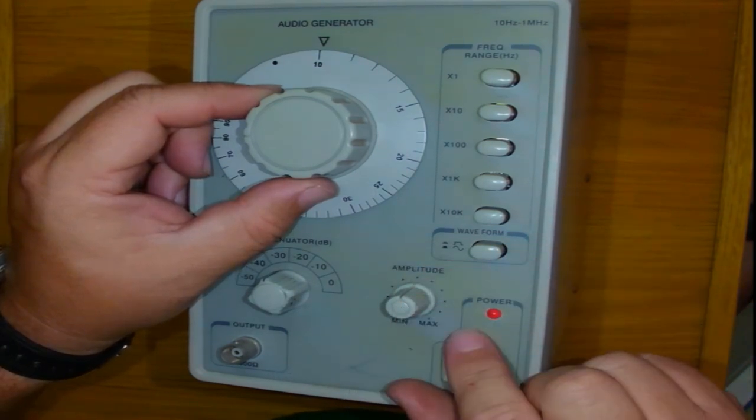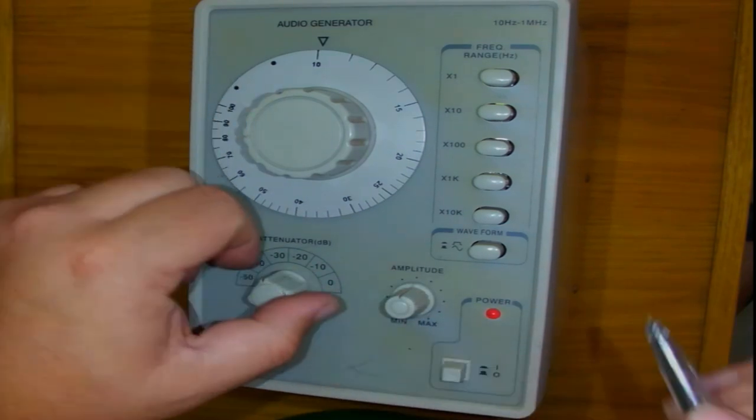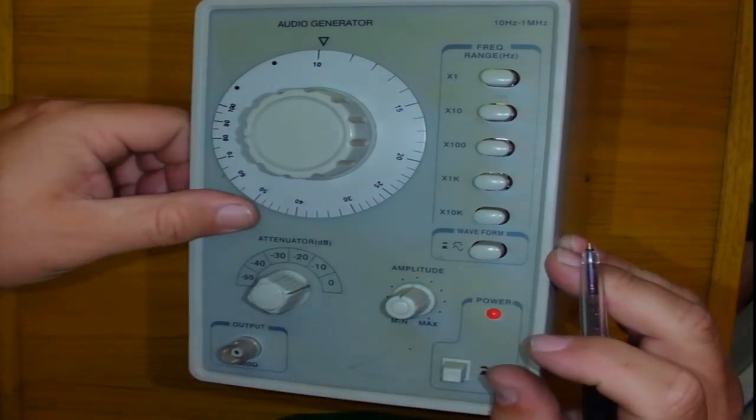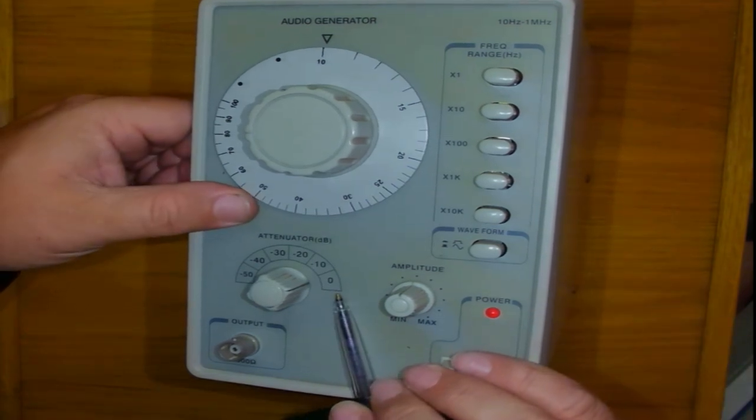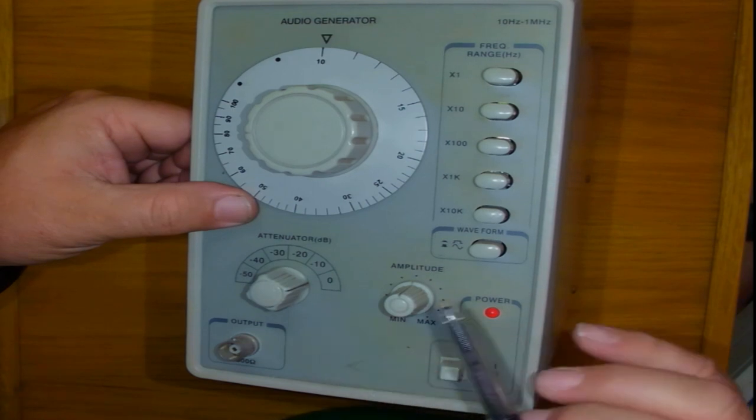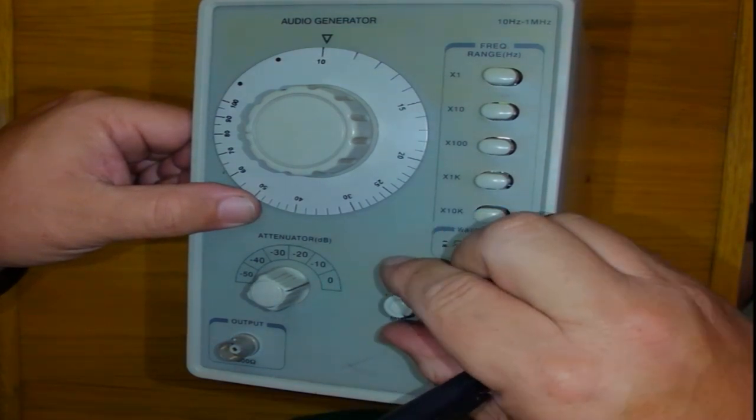That is adjusted by something called the amplitude and the attenuator. From mathematics, you will remember that if something is 0 dBs, it means it is full strength.